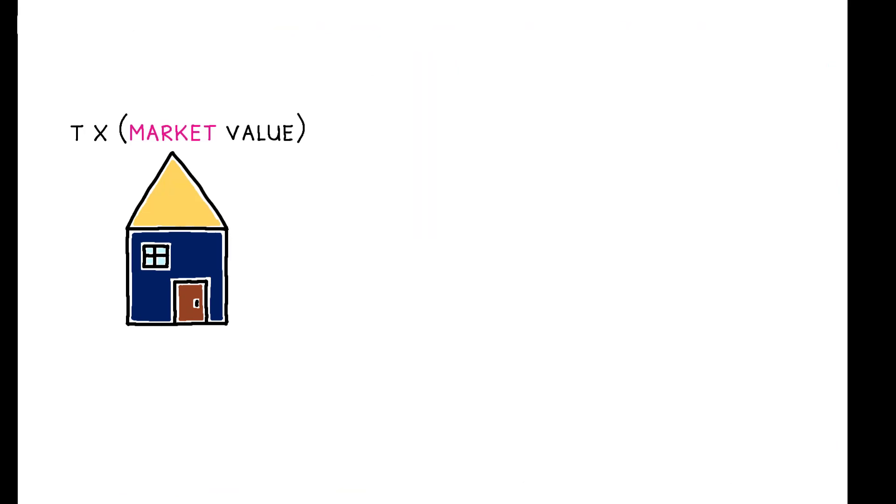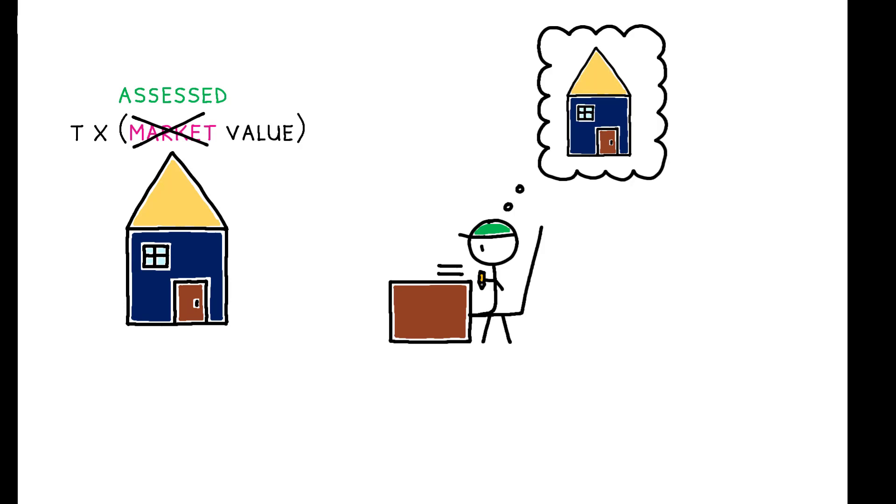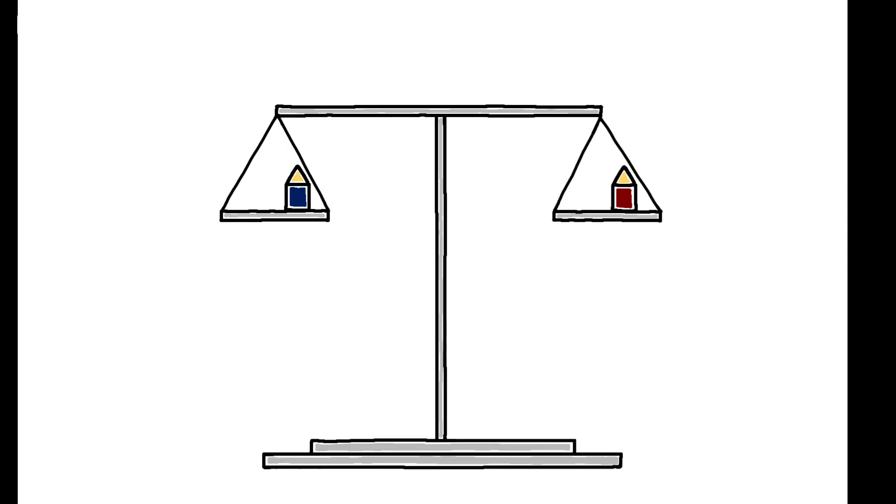In practice, however, tax bills are calculated using a home's assessed value. This is a local official's projection of market price, and equitable property tax administration requires that the ratio of assessed value to market value be the same for all residents in a given taxing jurisdiction.